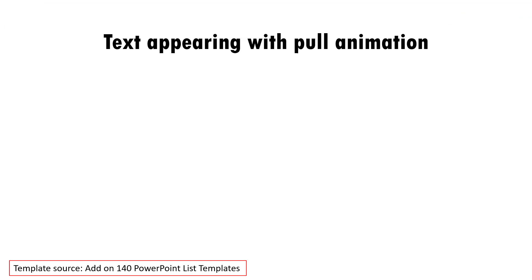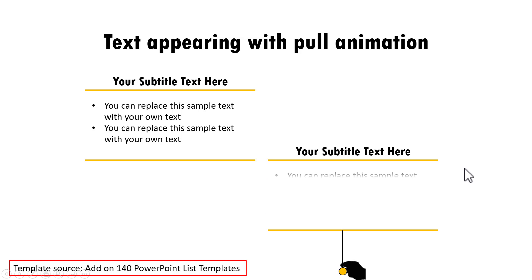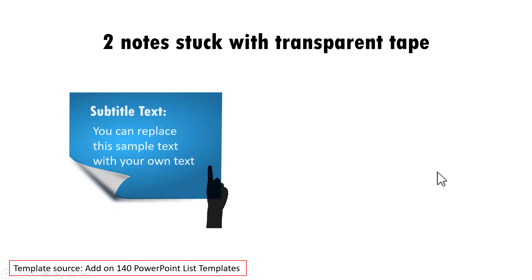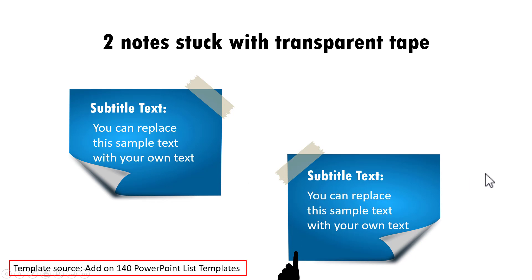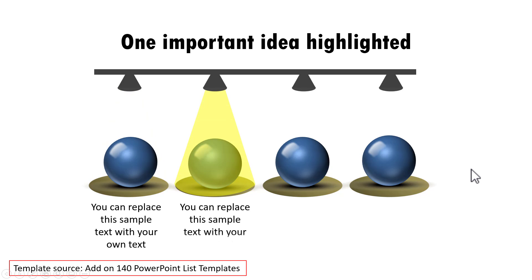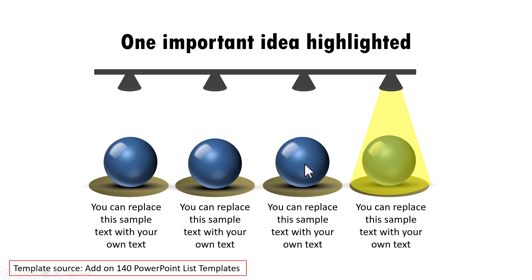Let me show you some examples. In one template showing two points, a subtitle is introduced and then details appear with an interesting animation; then click to present the second topic and its details. Another template shows two sticky notes with transparent tape — click to show the first point, then click for the second. Another example shows four important points with highlights, where the highlight moves from one point to the next on each click, shifting focus away from the previous point.